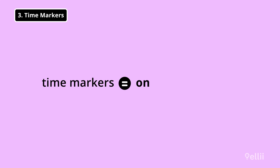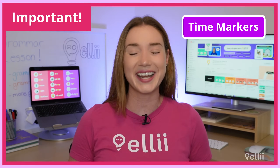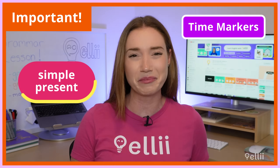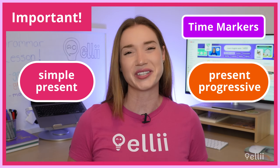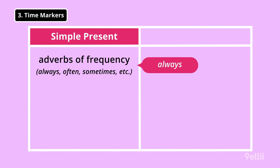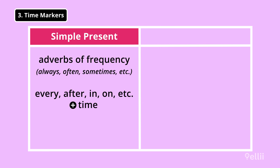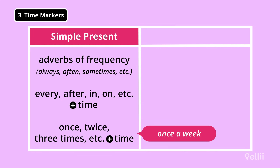Time markers are one or more words that show the time when an action takes place. They're really important in helping you determine whether you should use the simple present or the present progressive. Simple present time markers include adverbs of frequency such as always, often, usually, sometimes, almost never, etc. Expressions of time such as every morning, after dinner, in the evening, on weekends, etc. And numerical forms such as once a week, twice a month, three times a year, etc.